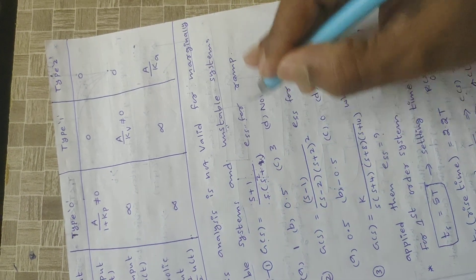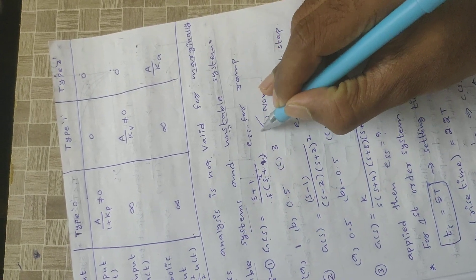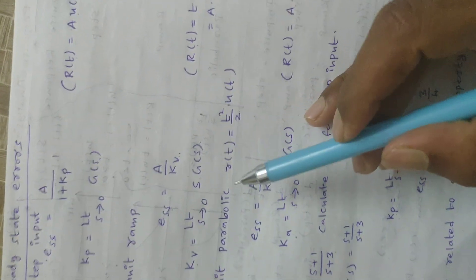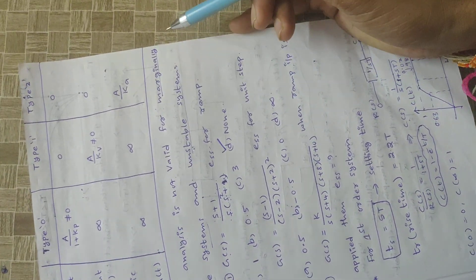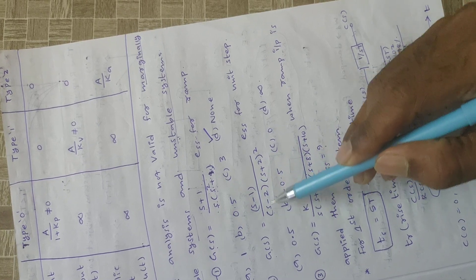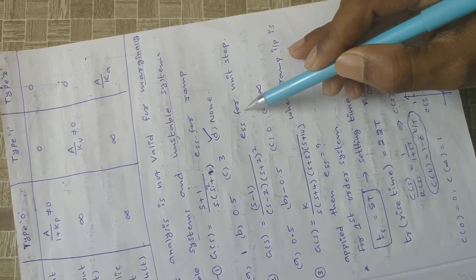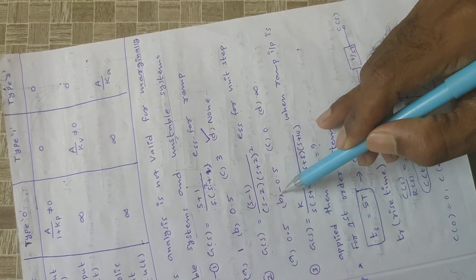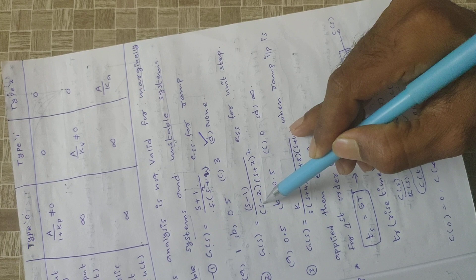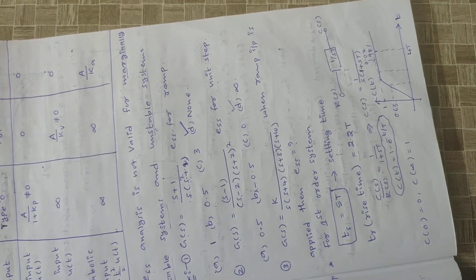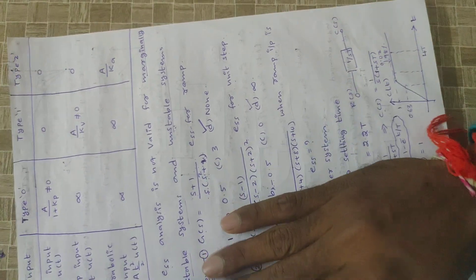However, ESS analysis is not valid for marginally stable or unstable systems. In this problem, s squared plus 1 in the denominator means poles are on the imaginary axis, making the system marginally stable. Therefore, ESS cannot be applied and the correct answer is option d — cannot be determined. Similarly, for G of s equals s minus 1 by s minus 2 into s plus 2 whole squared, this is an unstable system producing unbounded output, so the answer is again option d.